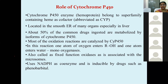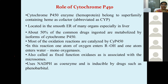Cytochrome P450 can be induced by drugs. When you take some drugs, they induce Cytochrome P450 to metabolize. Sometimes one drug will induce Cytochrome P450 which will metabolize some other drug. For example, taking phenobarbital, an anti-epileptic drug, along with warfarin causes warfarin to be metabolized faster because phenobarbital induces Cytochrome P450. Warfarin is an anti-coagulant, so its action is lost. This is called drug interaction — one drug can speed up or slow down the metabolism of another drug.